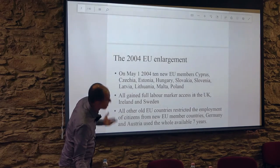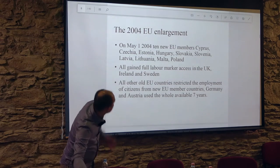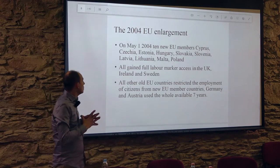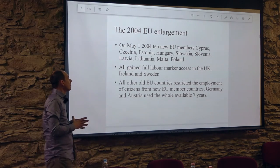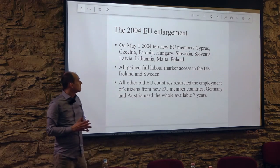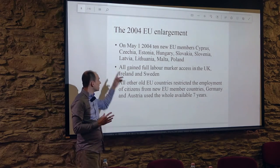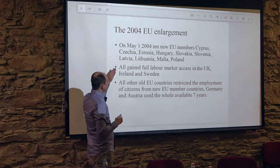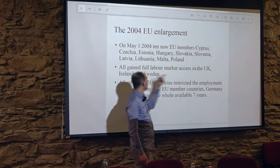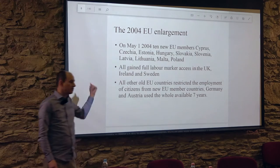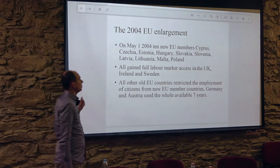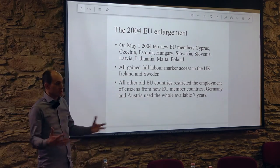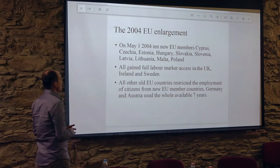So what happened in 2004? On May 1st, 2004, 10 new countries became EU members, including Cyprus, the Czech Republic, Estonia, Hungary, Slovakia, Slovenia, Latvia, Lithuania, Malta, and Poland. These countries gained full labor market access in only three out of the then 15 EU countries. Those three were the two English-speaking countries — the UK and Ireland — and Sweden, which didn't become a popular destination contrary to the UK and Ireland. All other EU countries restricted free labor market movement, but only Germany and Austria used the full seven-year transition period.